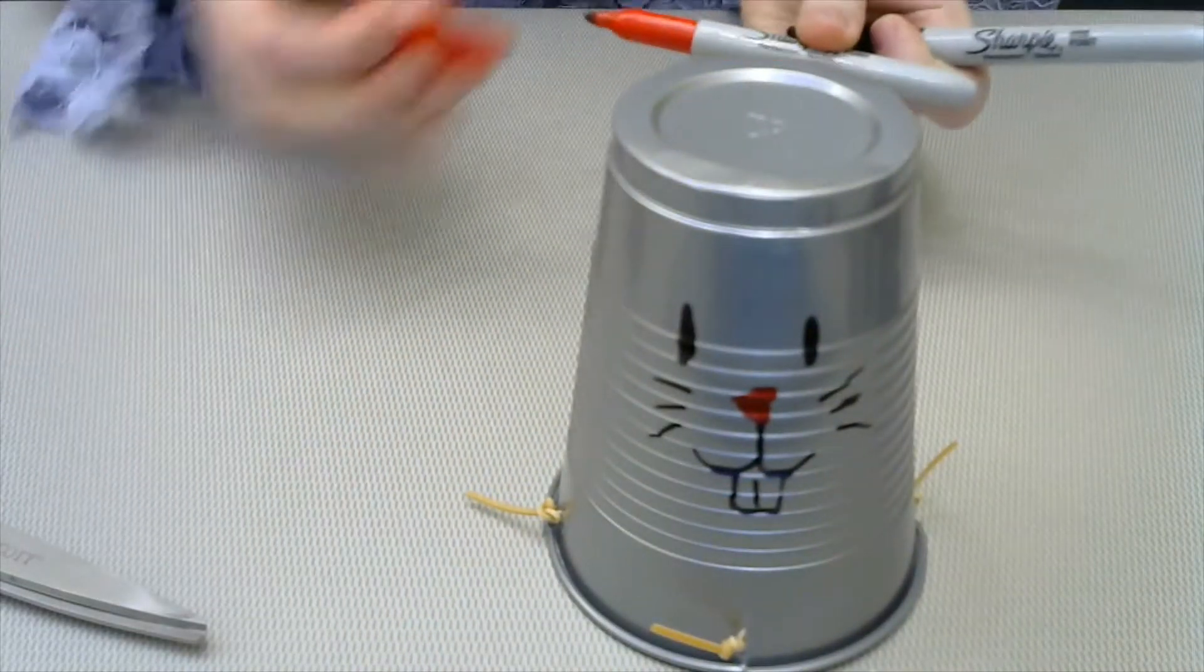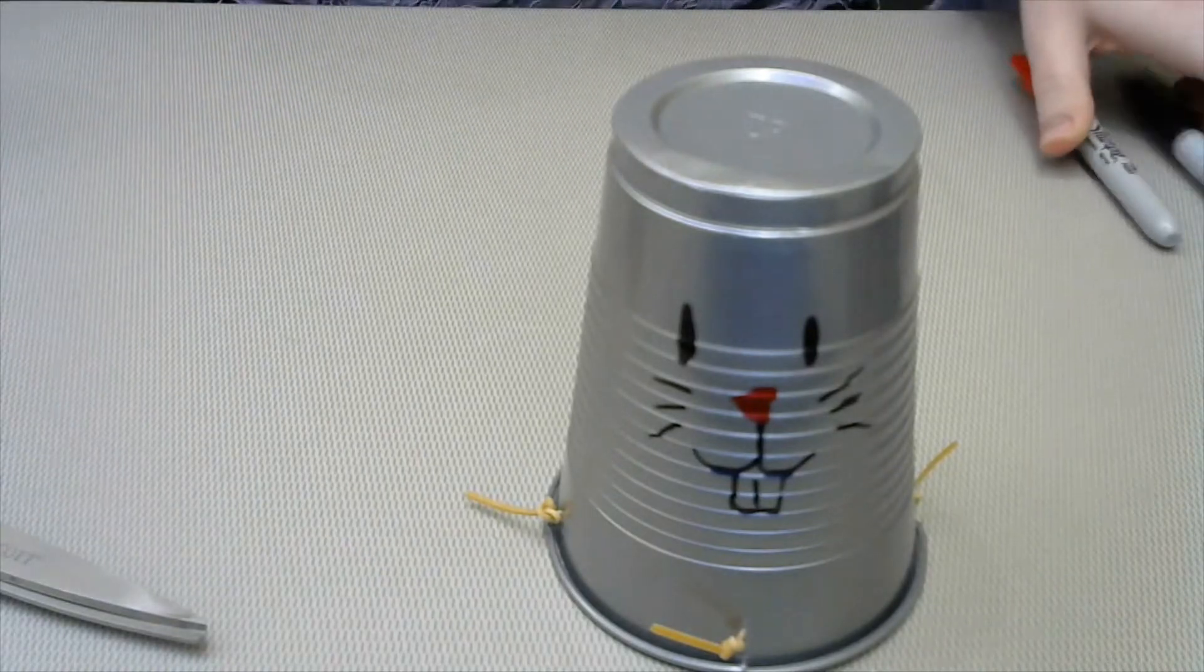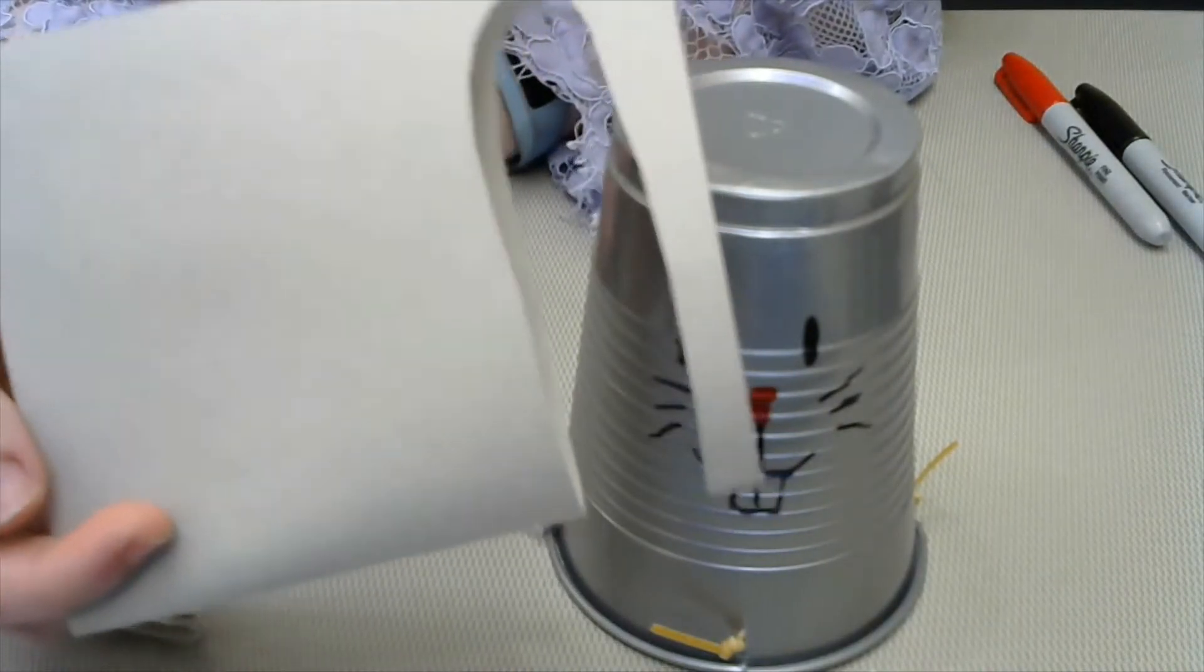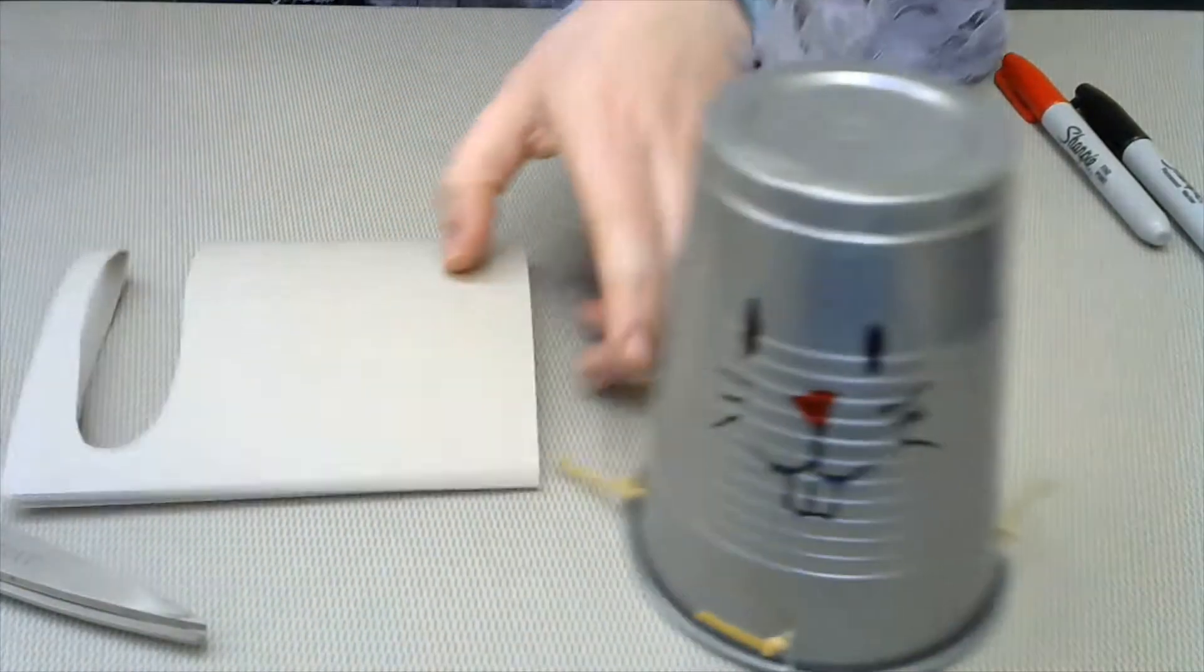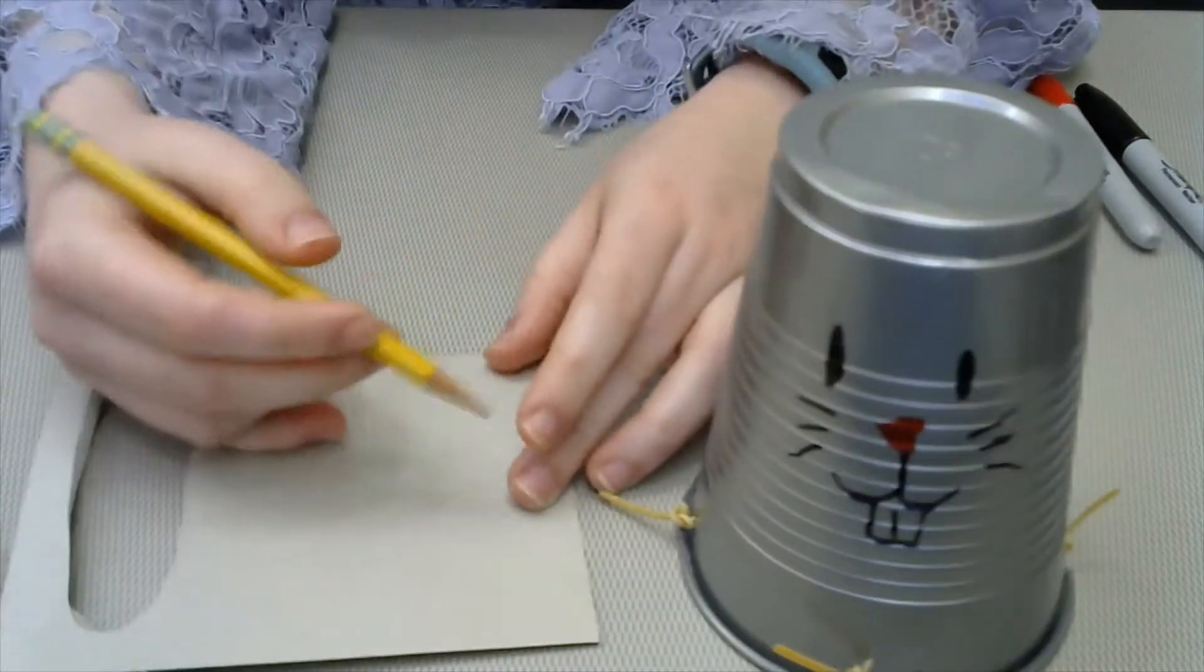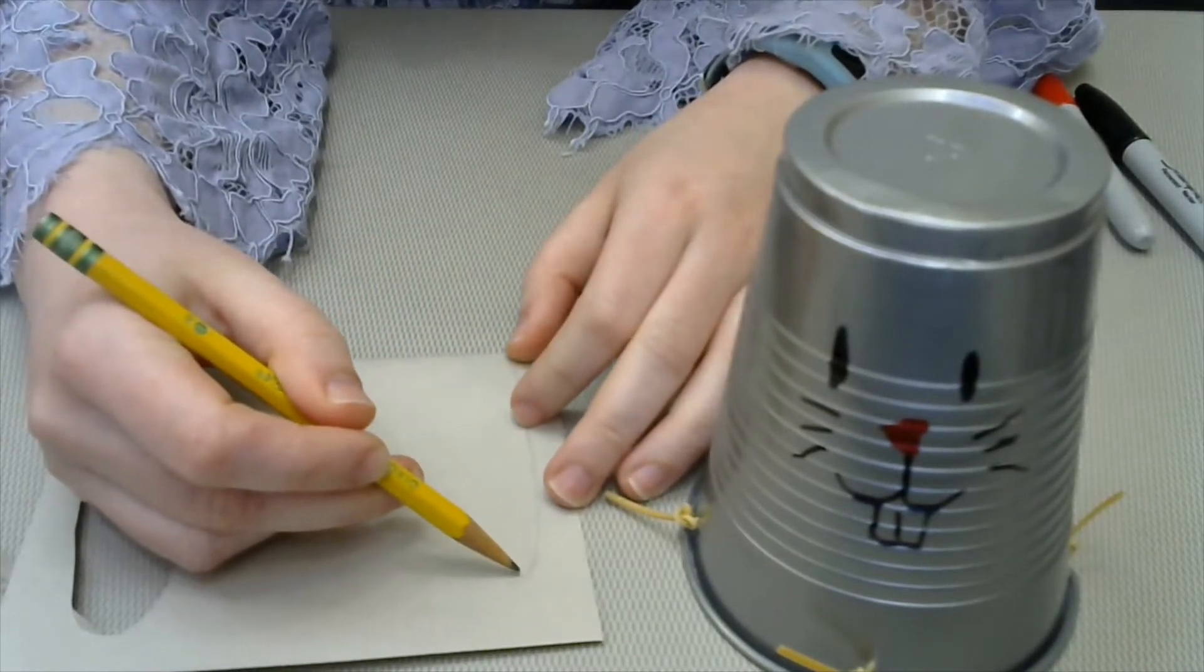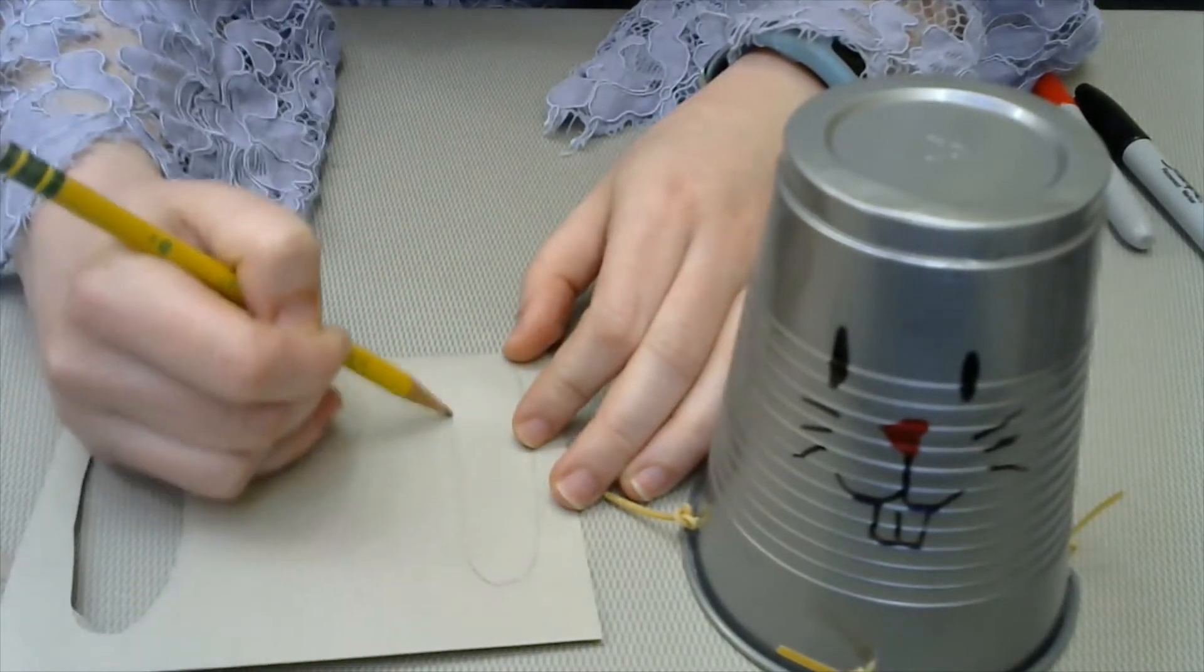Next, we're going to be doing the ears. So you're going to take a piece of construction paper, whatever color you want for the ears, and you're going to draw your shape. I'm going to use a pencil. Of course, rabbits have nice long ears.